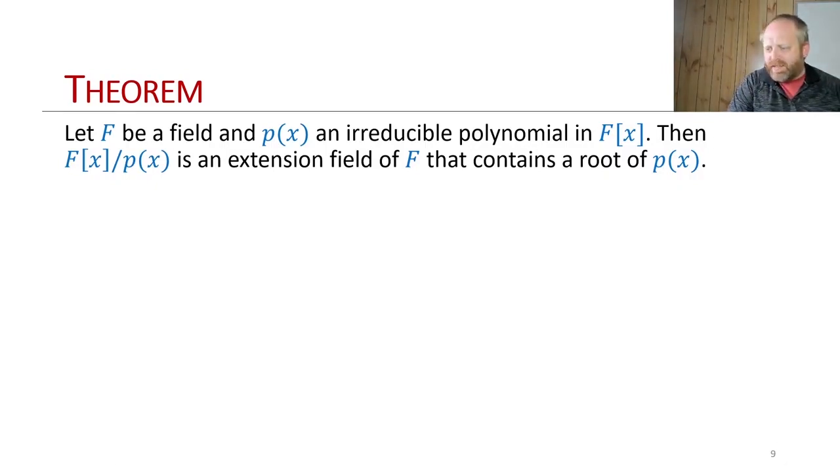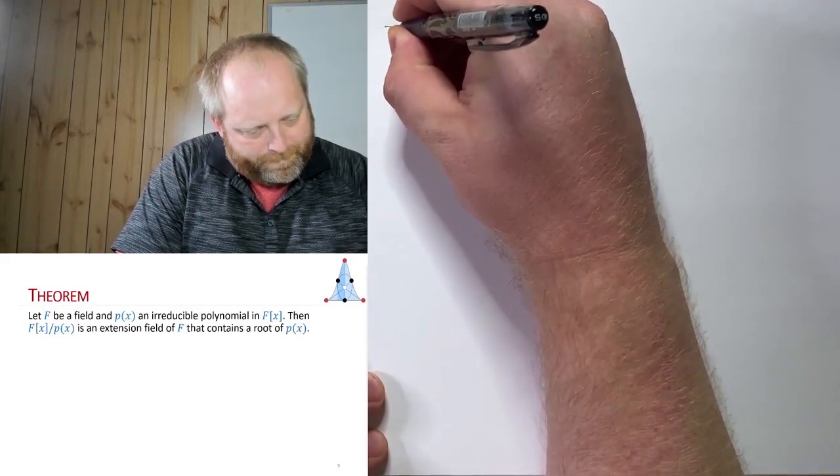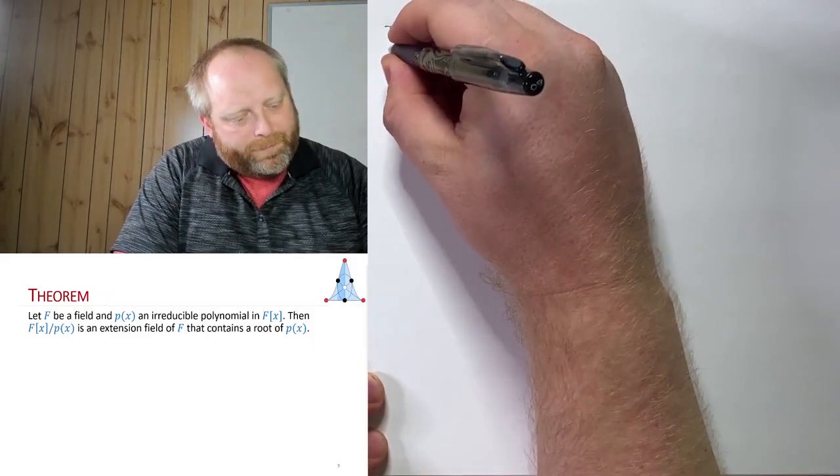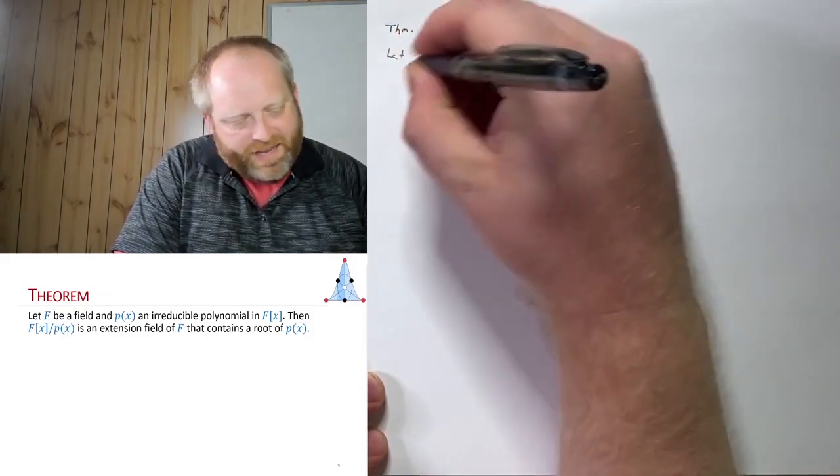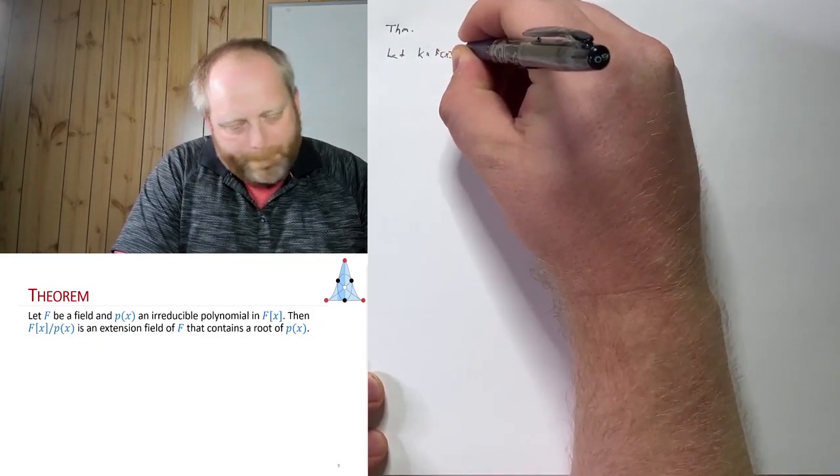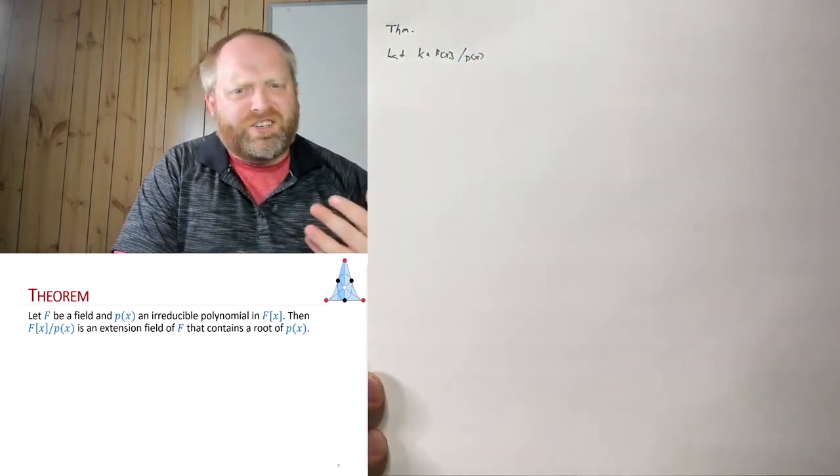Jumping over to my workspace here. Let's let K be this extension field. So K is going to be F[x] mod p(x), just because K is a lot easier to say.